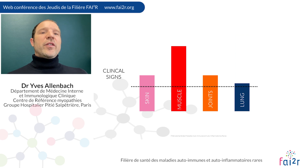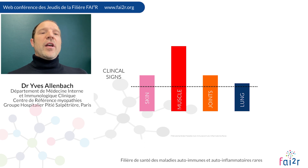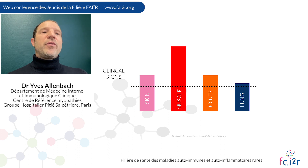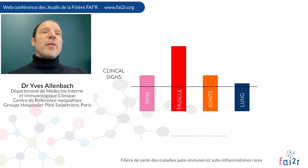Concerning myositis and muscle signs, most Jo-1 patients have clear myositis, whereas MDA5 patients frequently do not have clinical muscle signs, showing slow or no increase in CK levels. PL7 and PL12 patients among antisynthetase antibodies have mild muscle disease in most cases. Pathologically, antisynthetase syndrome has specific features: necrotic fibers clustered in perifascicular areas, defining perifascicular necrotizing myositis. This differs from DM, which shows perifascicular atrophic muscle disease without muscle necrosis — the canonical pathological pattern of DM.